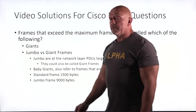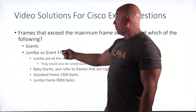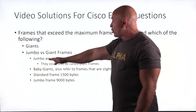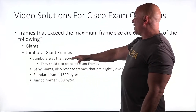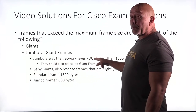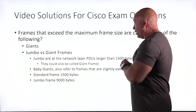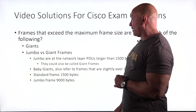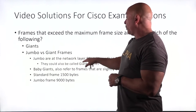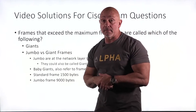There's Jumbo and there's also Giants. Jumbos are at the network layer PDU larger than 1500 bytes. They could also be called Giants. So Jumbos could also be called Giants.